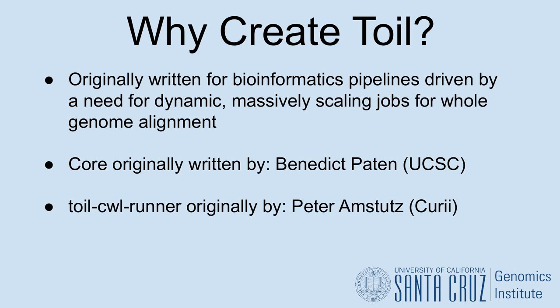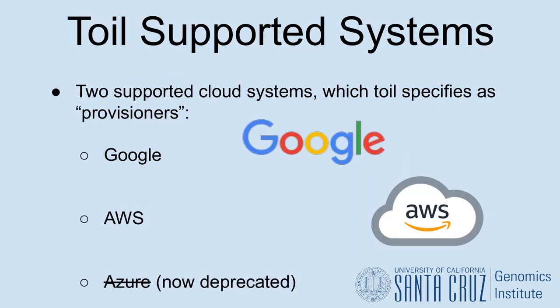On the Toil CWL runner side of things, which is largely a layer over the CWL tool codebase and which wraps and runs CWL jobs as Toil jobs, this was originally designed and developed by Peter Amstutz of Curie. Since this start, Toil has over the years added cloud support for AWS and Google, which Toil specifies as provisioners.